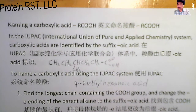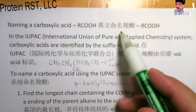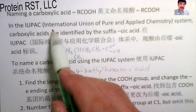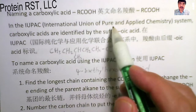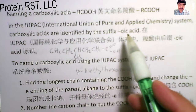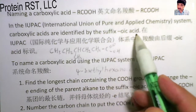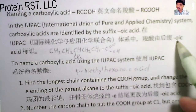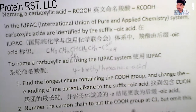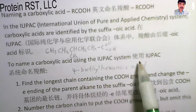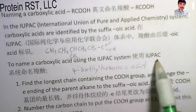Let's take a look at how to name a carboxylic acid. In the IUPAC system — IUPAC is the International Union of Pure and Applied Chemistry — a carboxylic acid is identified by the suffix '-oic acid.' To name a carboxylic acid using the IUPAC system, the steps are as follows.